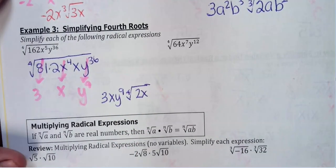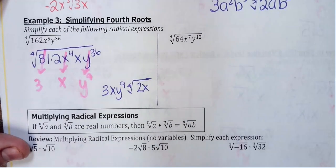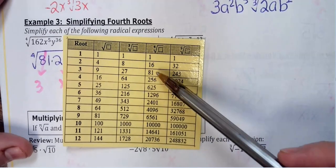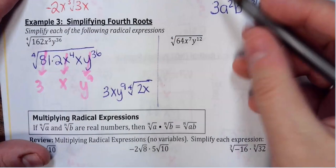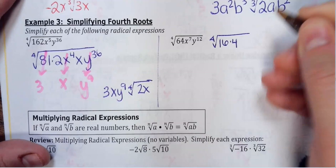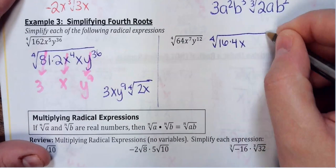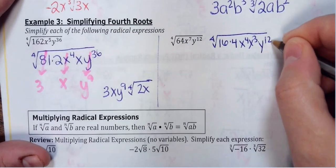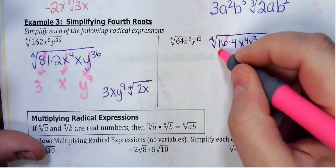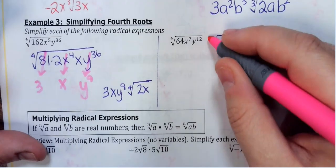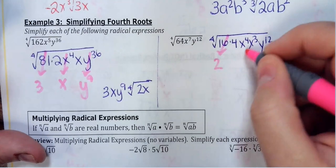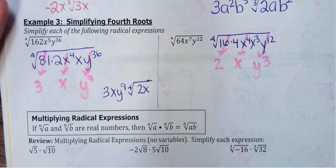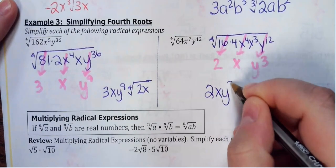For ∜(64x⁷y¹²): the only thing to check is 16 since 81 is too big — and 16 goes into 64, giving 16×4. I need my exponent divisible by 4: for x⁷, I use 4 and 3 to break it apart; y¹² is divisible by 4 so I leave it alone. Fourth root of 16 comes out as 2, x⁴ comes out as x, y¹² comes out as y³. The answer is 2xy³·∜(4x³).